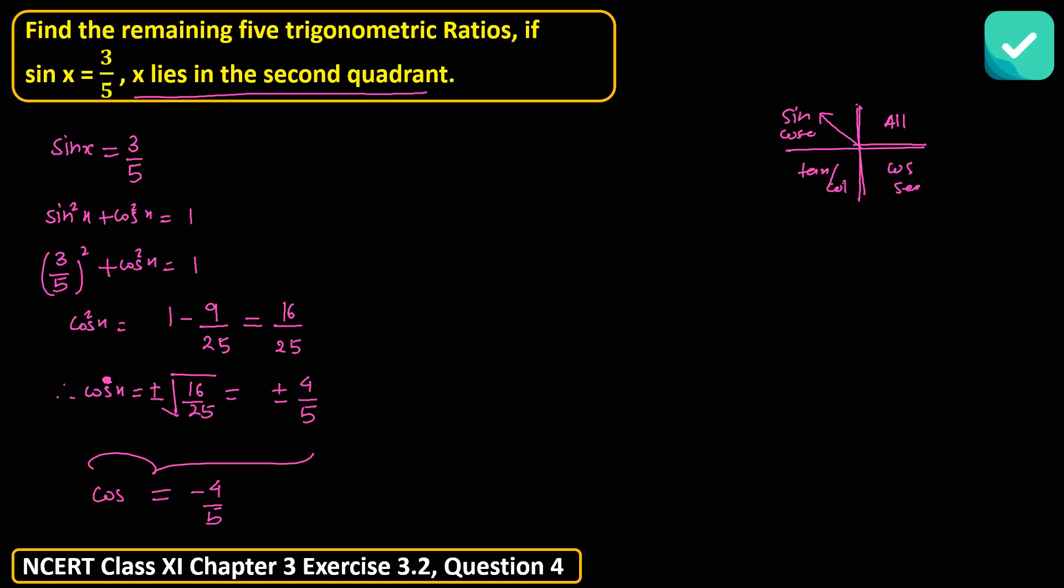Now I know sine and cos, so easily we can figure out tan x. Tan x is nothing but the ratio of sine x over cos x. Sine x is 3 over 5, cos x we just found. Put the value, you will get minus 3 over 4.